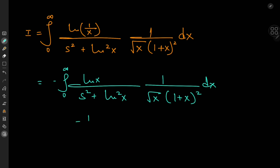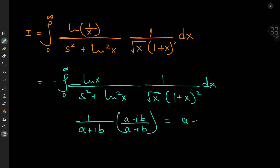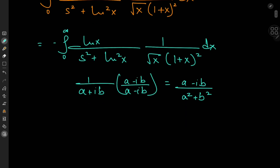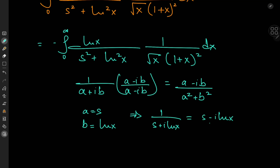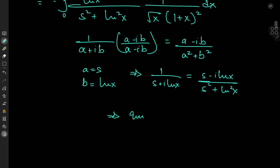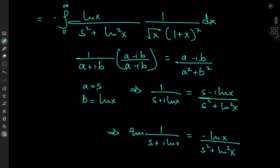Recall that we can expand 1 by (a + i·b) using a conjugate as (a − i·b) divided by (a² + b²), since a complex number times its conjugate is always the squared modulus. If I replace a by s and b by log x, then 1 by (s + i·log x) equals (s − i·log x) divided by (s² + log² x). The imaginary part of 1 by (s + i·log x) equals negative log x divided by (s² + log² x), which is exactly the term in our integrand.